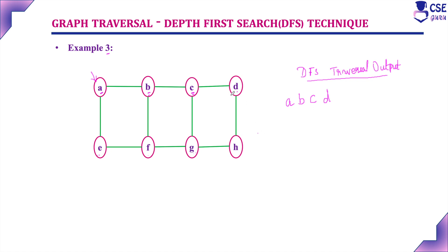Currently visited vertex is D. C is also adjacent but it is already visited, so the adjacent unvisited vertex to D is H. Visit H. Now currently visited vertex is H. The adjacent unvisited vertex to H is G. Visit G next.